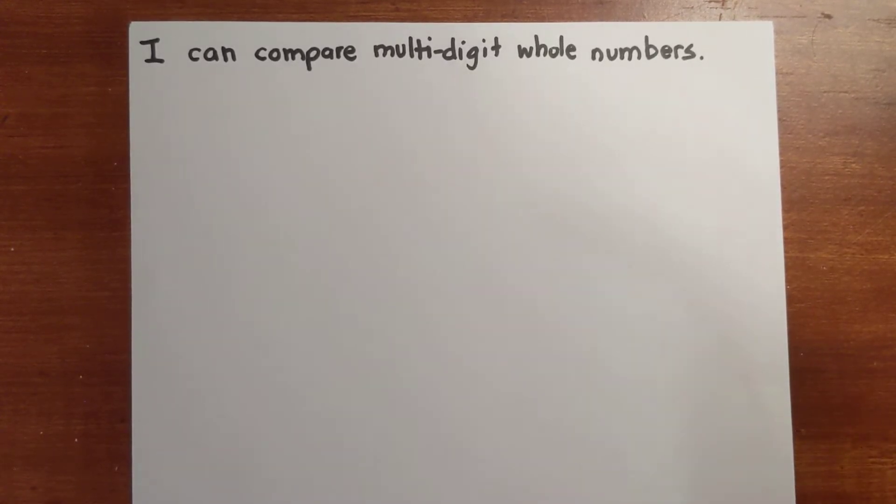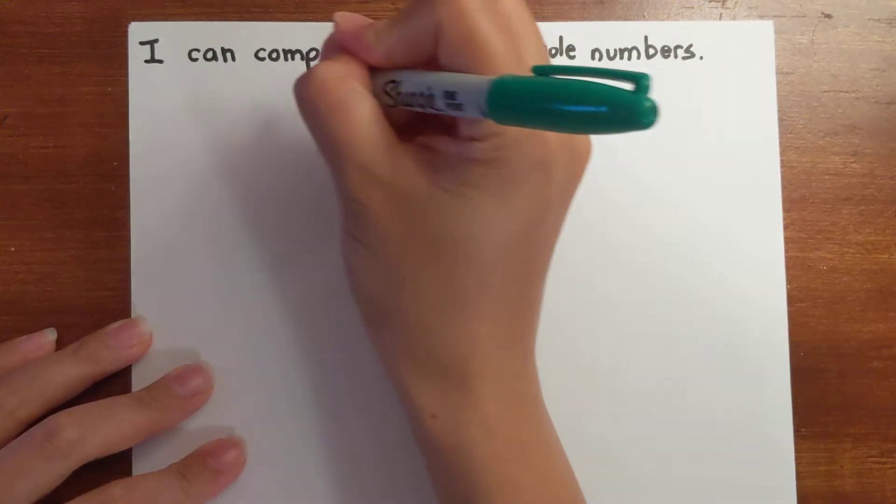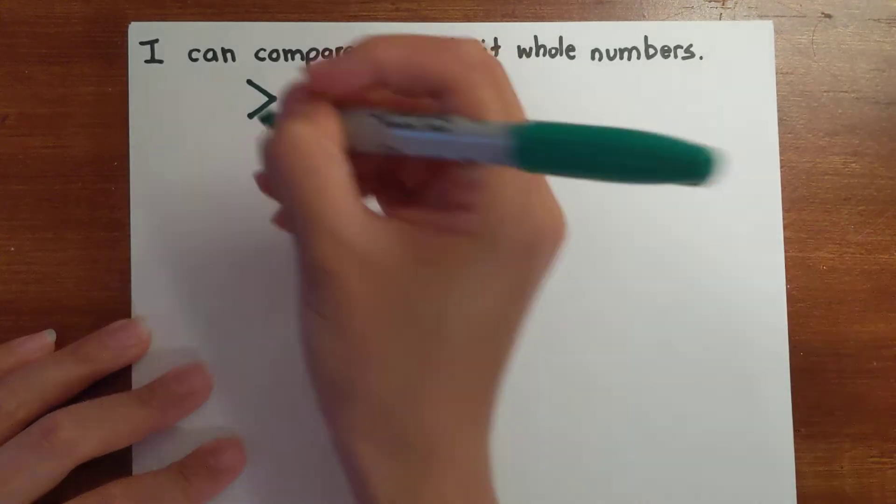I can compare multi-digit whole numbers. And before we can compare, we have to look at our three basic comparative symbols. So we're going to start with greater than.